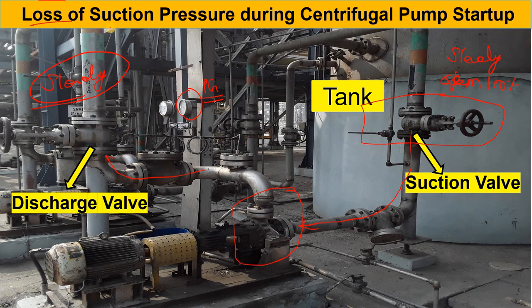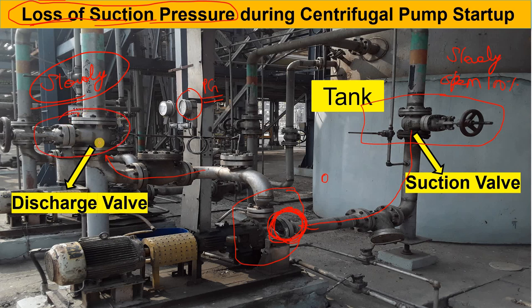Now, when does this problem occur — the loss of suction pressure? At the suction side, inside the centrifugal pump there is the impeller and there is the eye of the impeller, where the pressure is minimum. If the pressure is minimum, the velocity is maximum. So as you open the pump discharge valve, velocity in the suction line increases, and because of that the pressure at the eye of the impeller — the suction side — decreases.